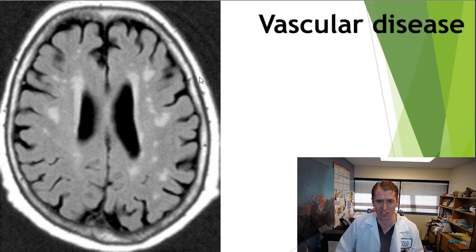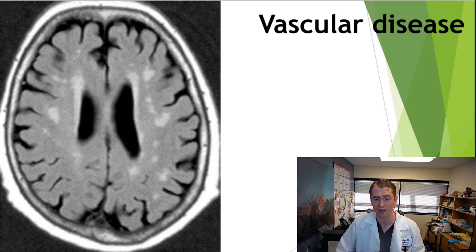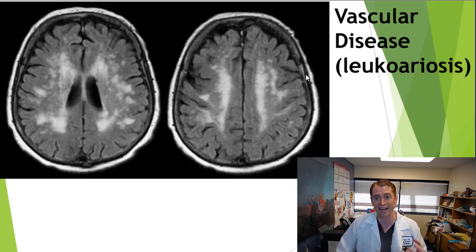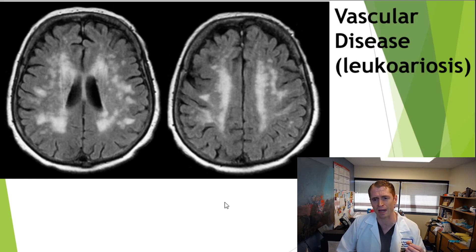Frontal lateral ventricle horn capping is a common benign finding. You can also see atrophy or loss of brain volume associated with this vascular disease, evidenced by enlargement of the lateral ventricles. In very advanced cases, particularly in an older person with more vascular risk factors, it can be quite impressive on MRI scans, but these are very patchy lesions, not typical of MS at all.